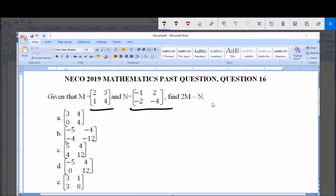Simply, let's split this and pick out 2M. Remember, we have to find 2M minus N. But now, let's evaluate 2M. Now, 2M would be equal to the scalar product of the matrix M, which is 2, 1, 3, and 4.